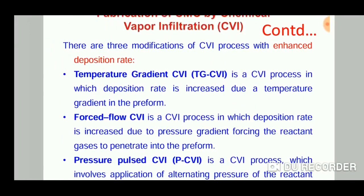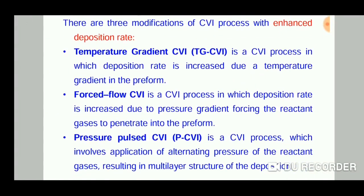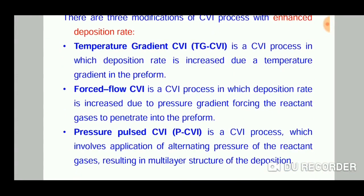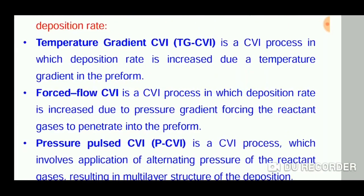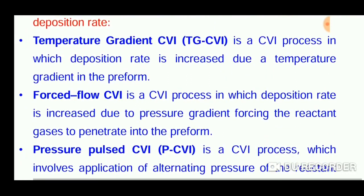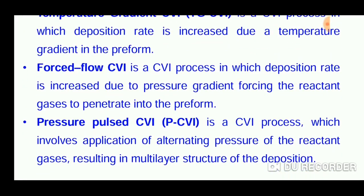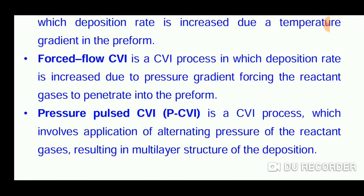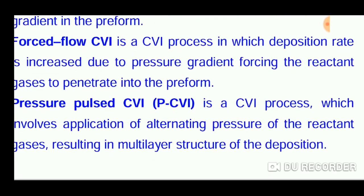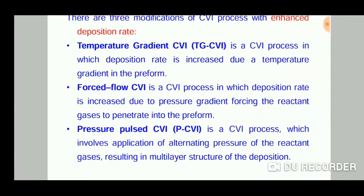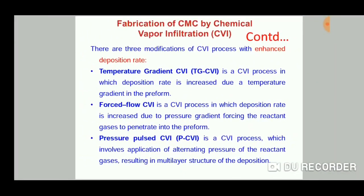There are three modifications of the CVI. The first is temperature gradient CVI, in which the deposition rate is increased due to the temperature gradient in the preform. The second is forced flow CVI, in which the deposition rate is increased due to the pressure gradient forcing the reactant gases to penetrate into the preform. The third is pressure pulsed CVI, which involves the application of alternating pressure of the reactant gases resulting in a multi-layer structure of the deposition so that different strength or properties of composites can be obtained.